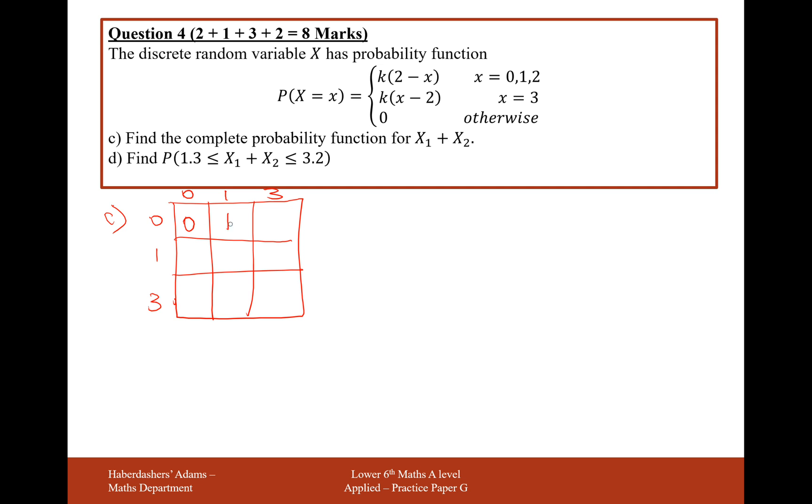We could have a 0, we could have a 1, we could have a 3 from when we add these results together. We could have a 1 here, a 2 here, a 4 here. We could have a 3 here, a 4 here, and a 6 here. On our probability distribution, we need all of these values: 0, 1, 2, 3, 4, and 6. These are all the different possible outcomes when we roll our two dice that give us outcomes of 0, 1, and 3.